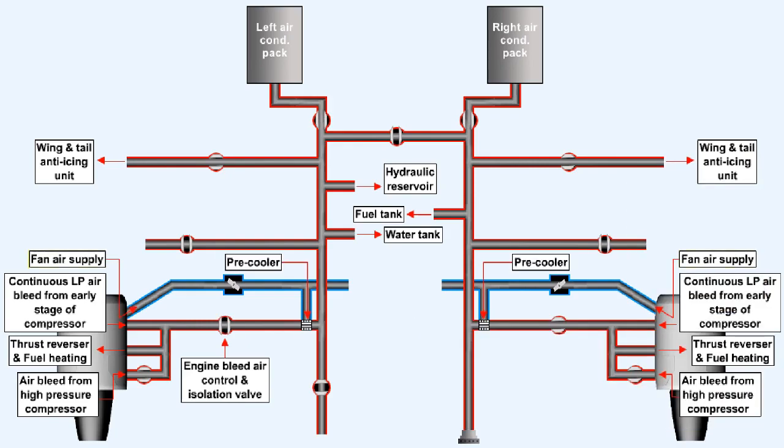This diagram also shows fan outlet air being used in a pre-cooler. The pre-cooler controls the temperature of the bleed air going into the system to an acceptable level. The fan can also be used to supply cooling air to the engine oil system and the constant speed drive unit.